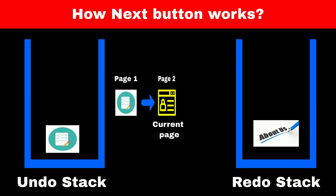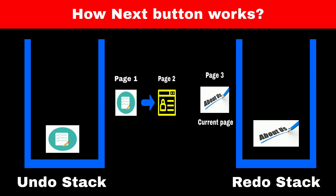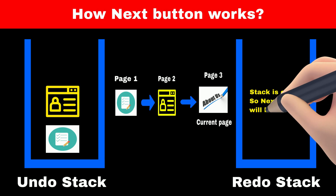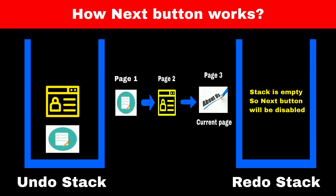Similarly, when we press the next button on page 2, page 3 which is at the top of the redo stack will be removed, and since our redo stack is now empty, the next button will be disabled.